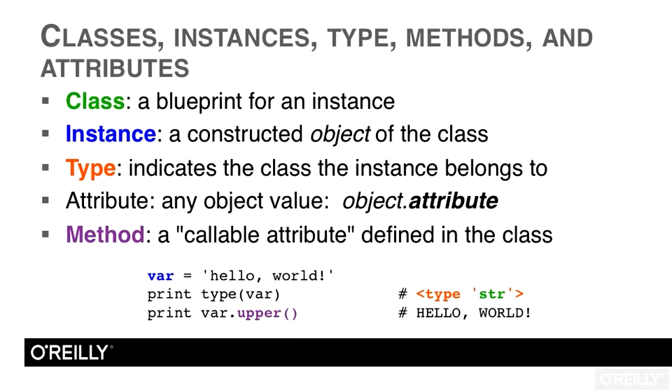Thus, any string that is created is part of the string class and therefore has an upper method. The string class defines upper, and thus all strings constructed will also have access to that callable attribute. Remember, I'm calling a method a callable attribute. So every method is an attribute, but not every attribute is a method.